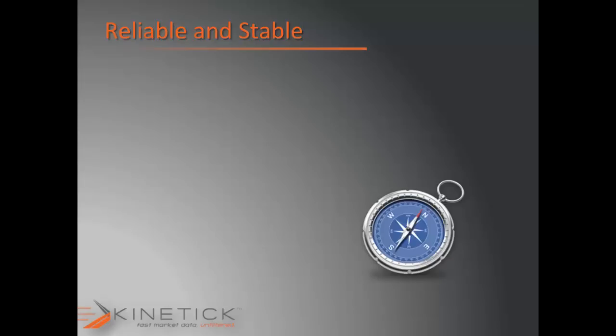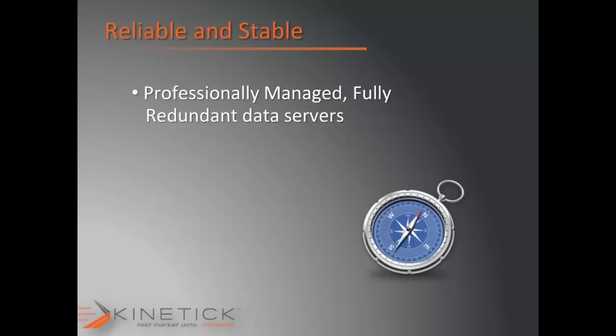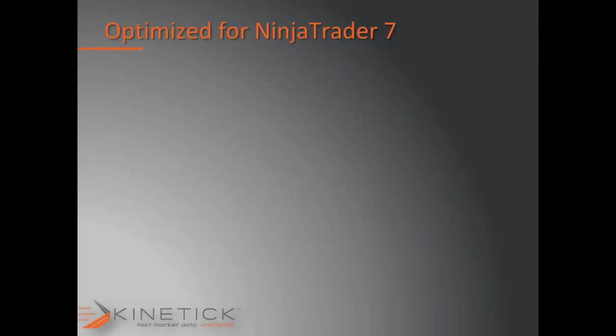Kinetic draws from professionally managed, fully redundant data servers — meaning there are at least two data servers in separate locations performing every single function. In the event one is powered down for any reason, there is another data server backing up the primary service functions. So even if you're using Kinetic as a backup to your data feed, your backup data has a backup. Kinetic has been built into and optimized for the NinjaTrader 7 platform, which is one of the reasons it is the preferred data feed provider.